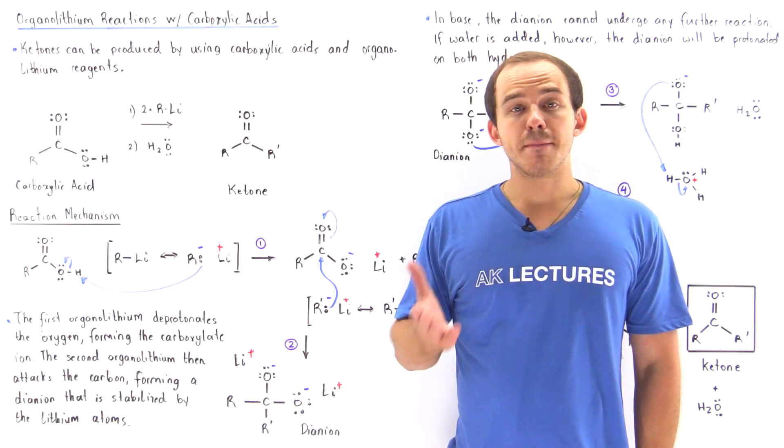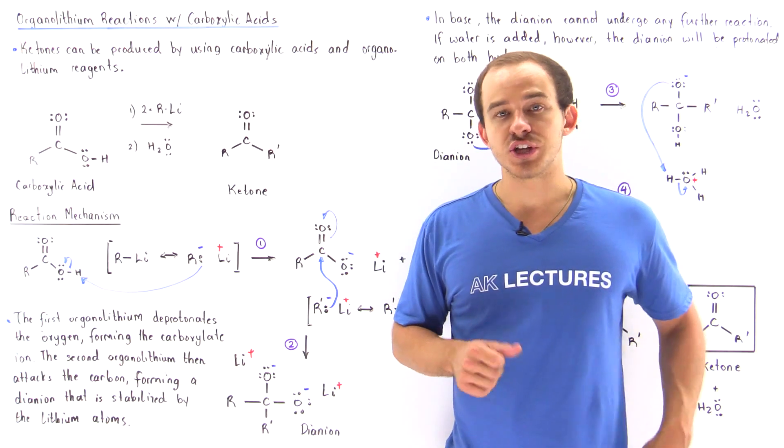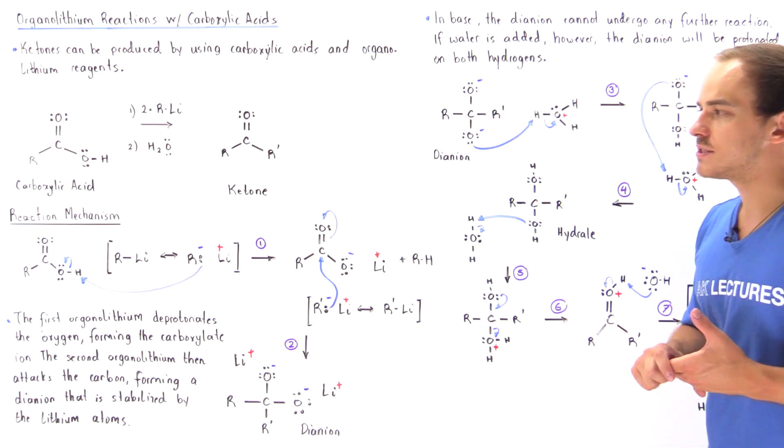Ketones can be produced by mixing carboxylic acids with organolithium reagents, and this is what we're going to discuss in this lecture.